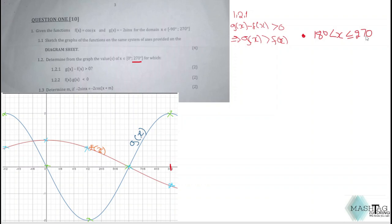The second question, 1.2.2, says the product of f(x) times g(x) is less than zero. That means where the product is actually negative. Where is it on the graph that the product of f(x) times g(x) is less than zero? Remember we're dealing with the domain 0 to 270°, which is only this side.